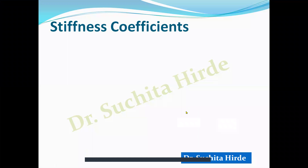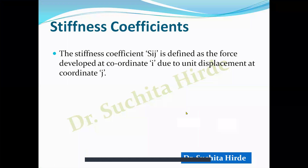Each element of a stiffness matrix is called a stiffness coefficient. The stiffness coefficient Sij is defined as the force developed at coordinate i due to unit displacement at coordinate j. For example, S12 is the force developed at coordinate 1 due to unit displacement at coordinate 2.